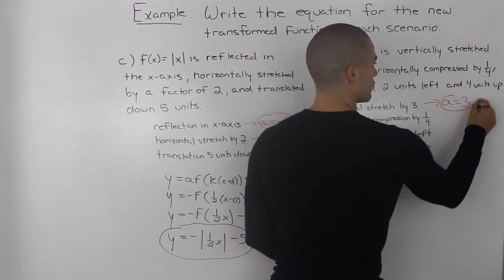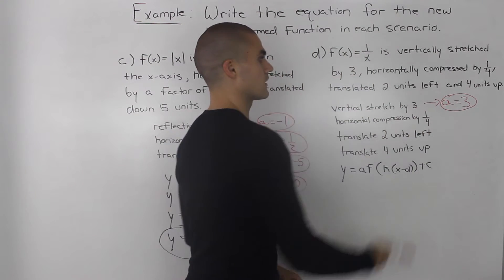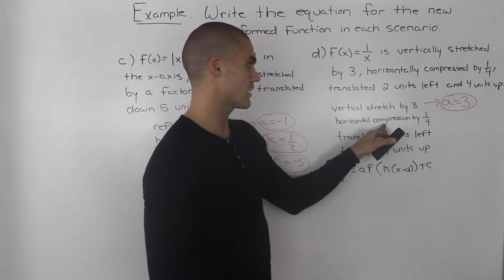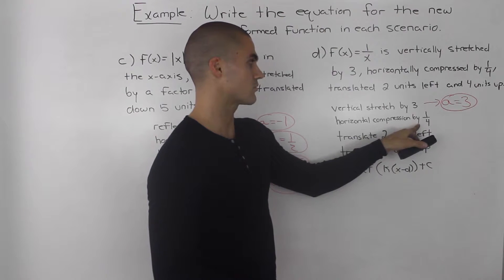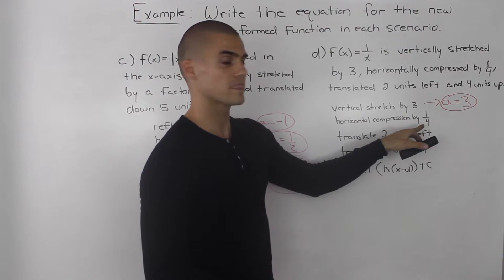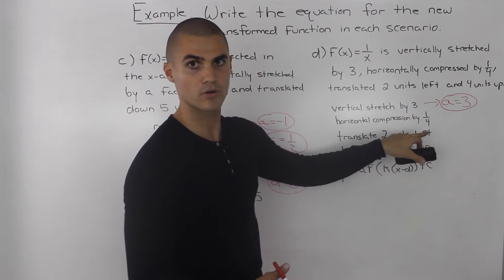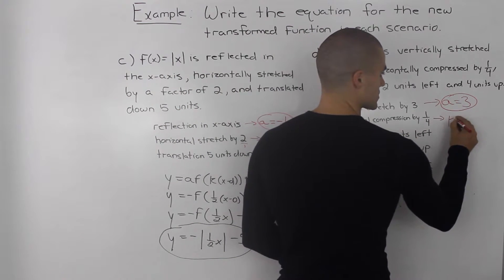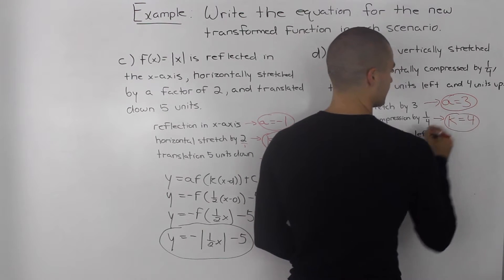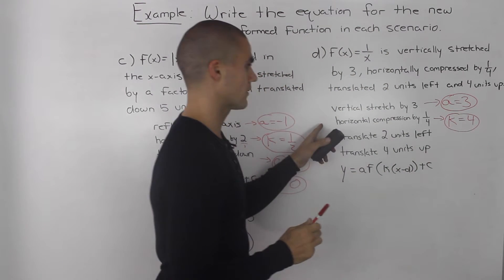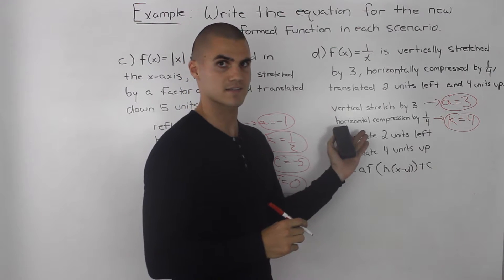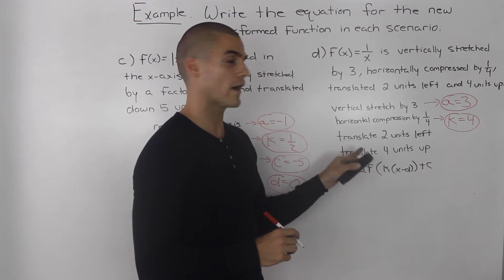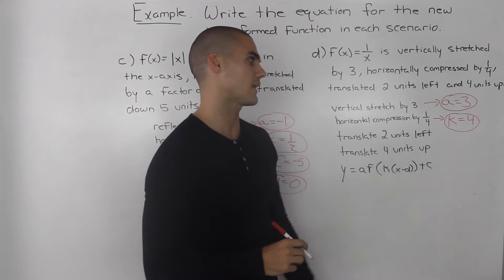The vertical stretch by a factor of 3 gives us a positive value of 3 for a. If the factor of the horizontal compression is 1 over 4, then the k value is the reciprocal of that, which is 4. There is no reflection in the y-axis, so k is just positive 4. If there was a reflection in the y-axis, then this would be negative 4.